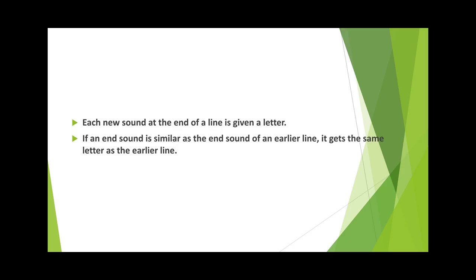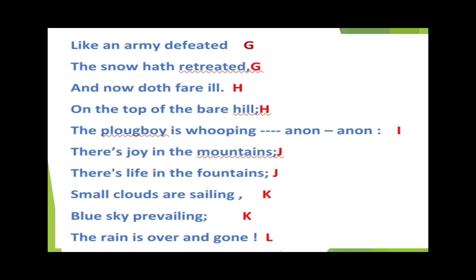So each new sound at the end of a line is given a new letter. And if an end sound is similar to the end sound of an earlier line, it gets the same letter as the earlier line — but this third point is not applicable in this poem. For example, suppose in the seventh or eighth line there is a word like 'still' — then hill, ill, and still would be the same pronouncing words. So even though it would be in the seventh or eighth line and not in continuation, we would still give them the label of hill and ill, that is H.